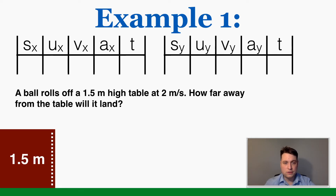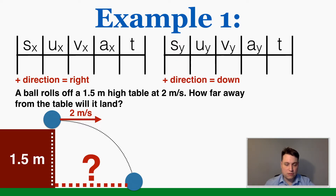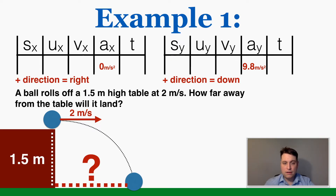Let's solve a problem. A ball rolls off a 1.5-meter high table at 2 meters per second — how far away from the table will it land? I'll call rightward positive on the x-axis and downward positive on the y-axis, since this object is only falling down. Because there's no force in the x direction, the x acceleration is zero, and in the y direction it's 9.8 m/s² positive. The goal is to find the x displacement — how far it moves horizontally.